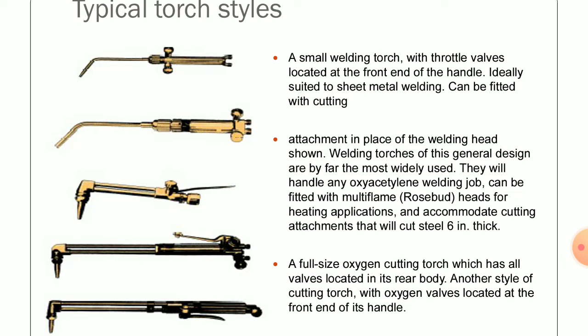A full-size oxygen cutting torch has all the valves located in its rear body. Another style of cutting torch has oxygen valves located at the front end of the handle.